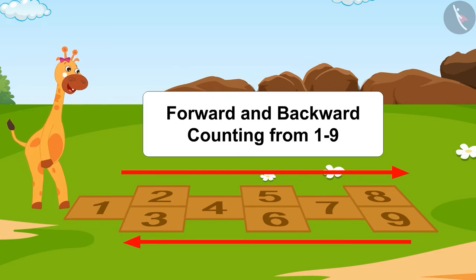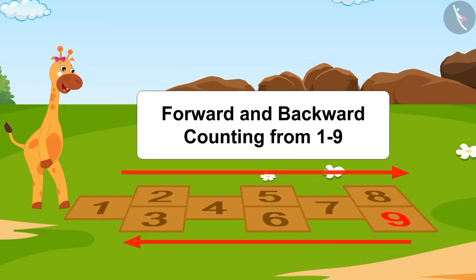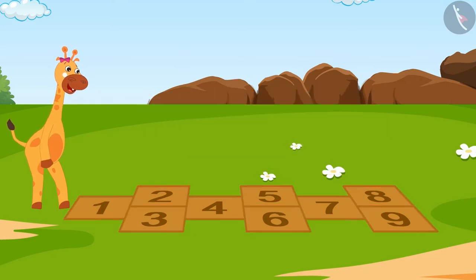On the ground, Gaffee has numbers 1 to 9 written in single boxes in a hopscotch grid like this. See this? There are numbers from 1 to 9 written in this hopscotch grid.